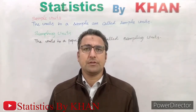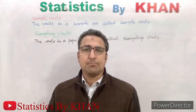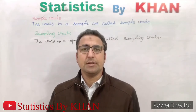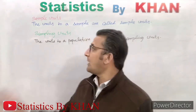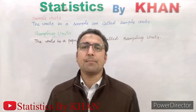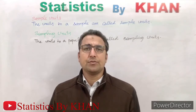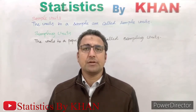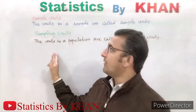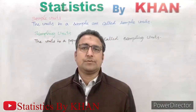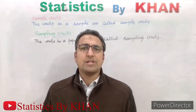The units in a population are called sampling units. Now, the words 'sample units' and 'sampling units' are very similar, but conceptually they are totally different or opposite. Sample units are the units in the sample, while sampling units are the units in the population. Sampling units are those units which are to be sampled, while sample units are those units which have already been sampled.